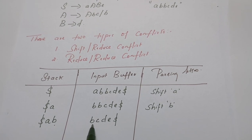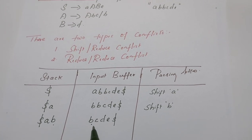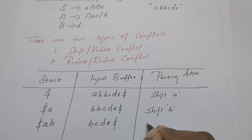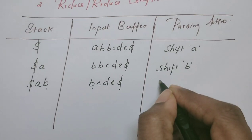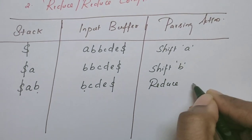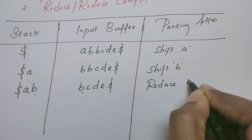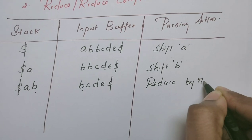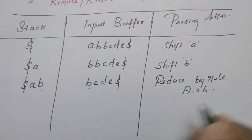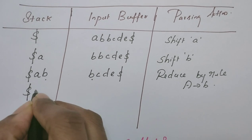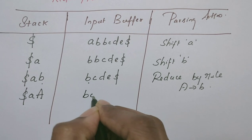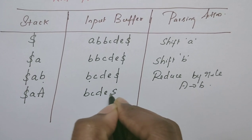The parser also gets confused — the way we think, the parser thinks the same way. So let us reduce B to A now, using the rule A derives B. Now the stack contains A — this B is reduced to A. The remaining string is B, C, D, E, dollar.